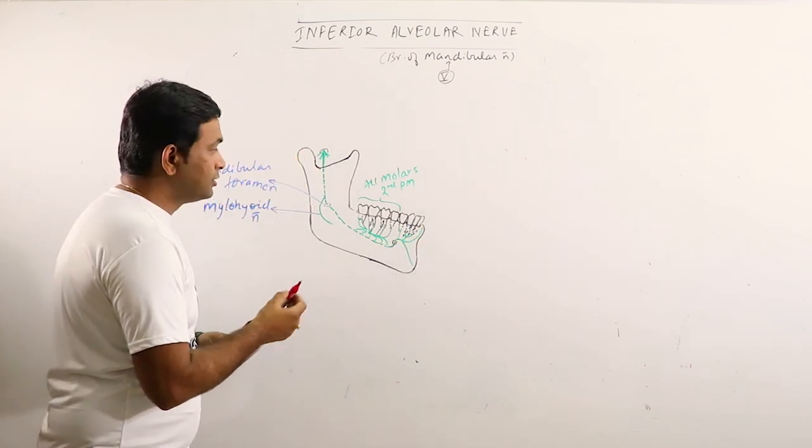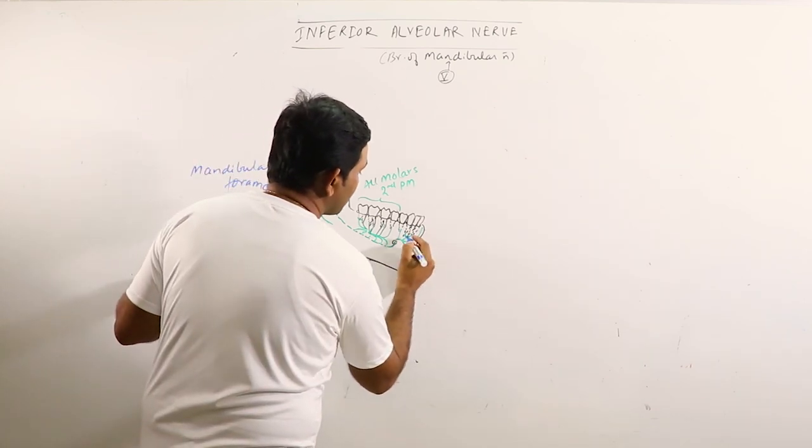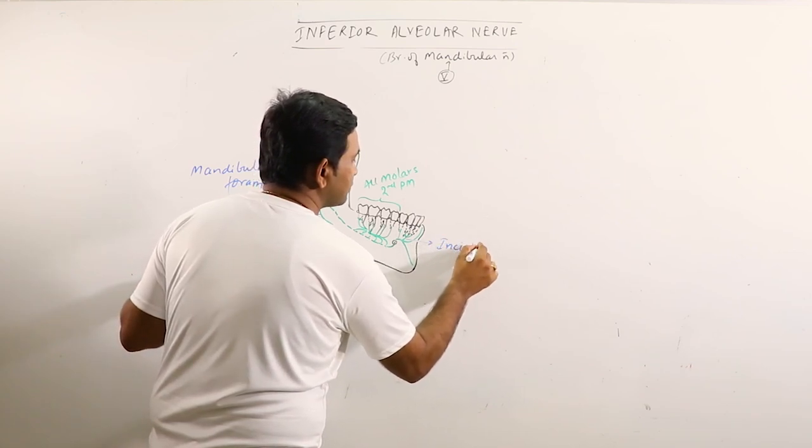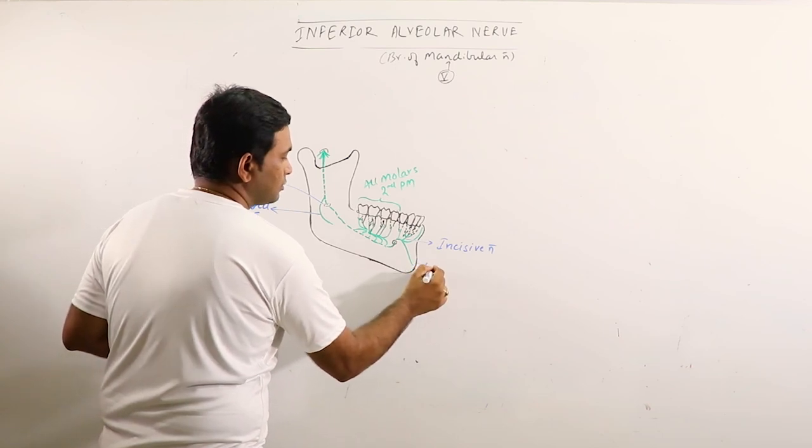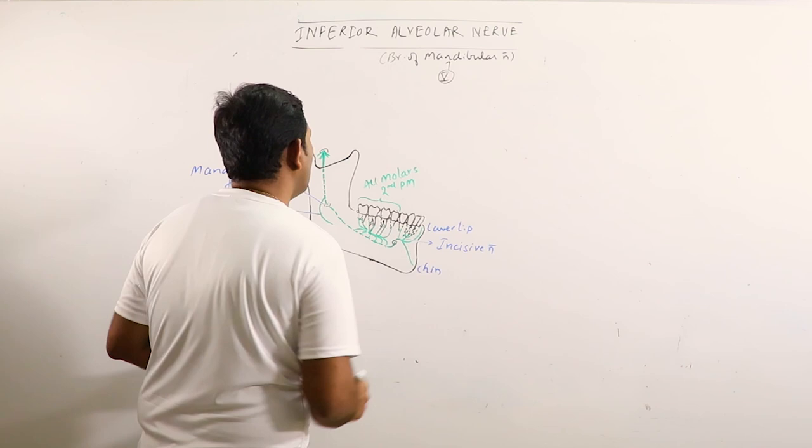So, this branch is the incisive nerve and this is supplying the chin. This is supplying the lower lip.